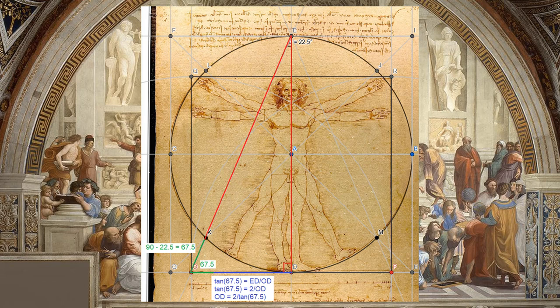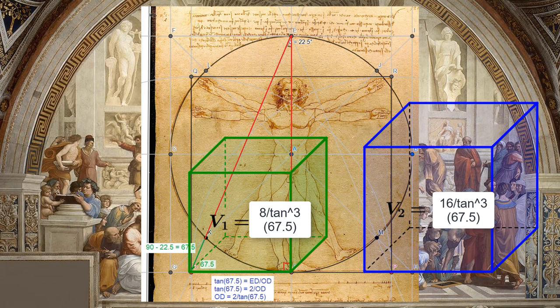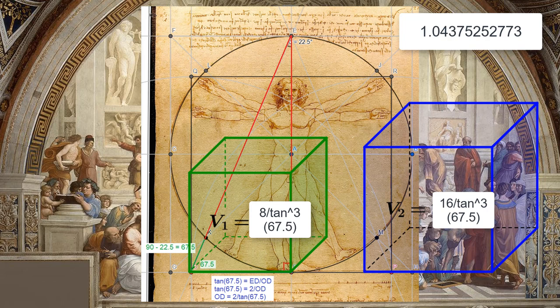We've already established that half the side length of the square is two divided by the tangent of 67.5, assuming the radius of the circle is one. Cubing this value gives us eight divided by tan of 67.5 to the third, which would be the volume of the cube created with side lengths equal to half the side length of da Vinci's square. Doubling this gives us 16 divided by the tangent of 67.5 to the third.